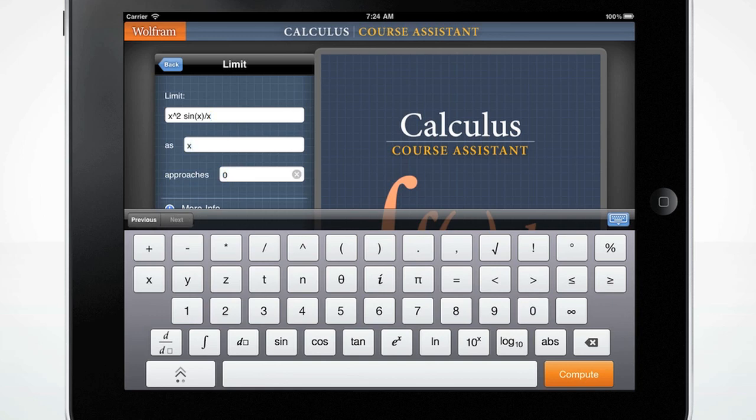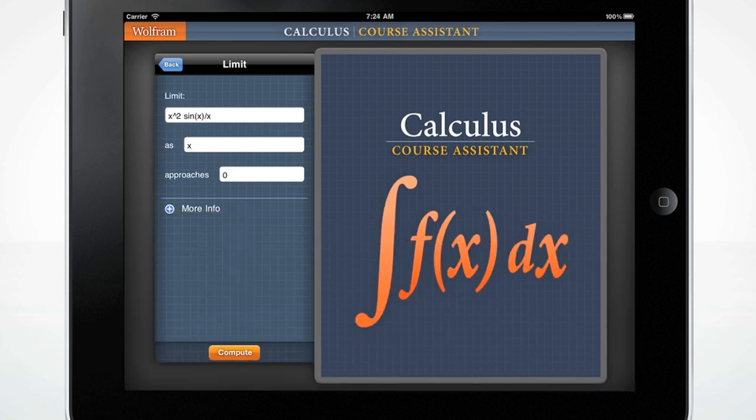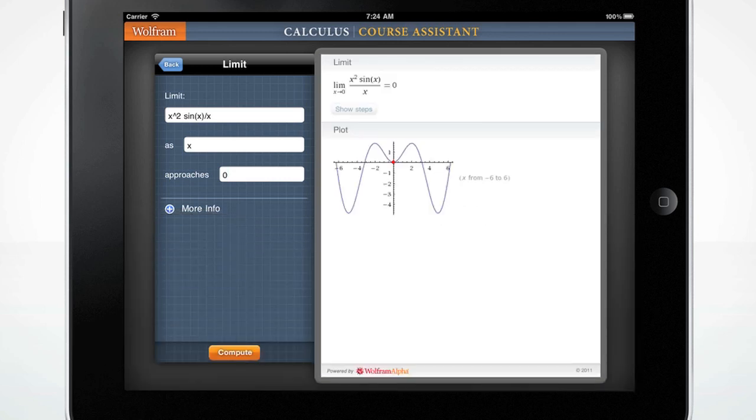Hide the keyboard by tapping on the blue keyboard icon. Press the orange Compute button to get your result. The Wolfram Calculus Course Assistant displays a solution to this equation as well as a plot identifying the solution on a graph.